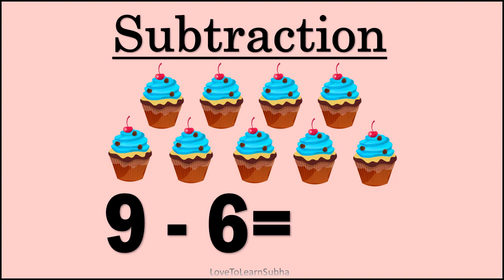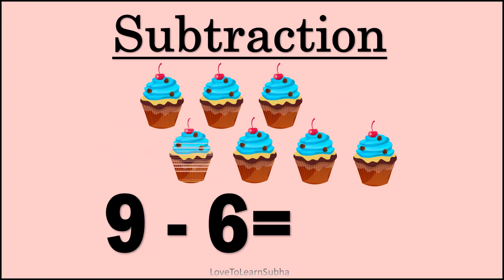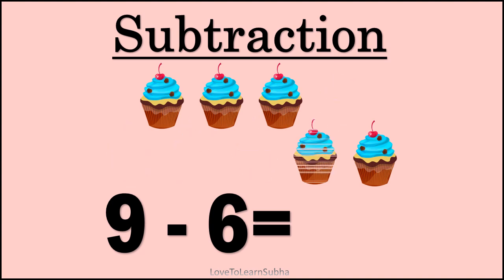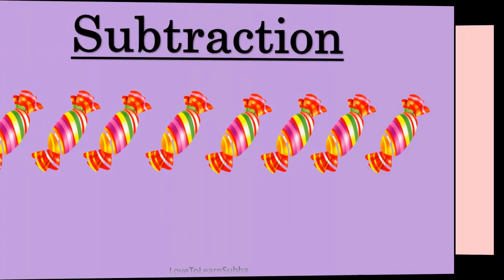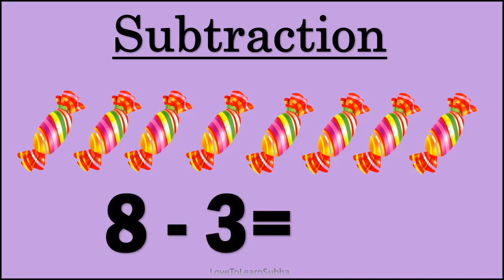From this we have to remove six cupcakes. Now let's start removing the cupcakes: one, two, three, four, five, six. Now let's calculate the remaining: one, two, three. So nine minus six gives three.